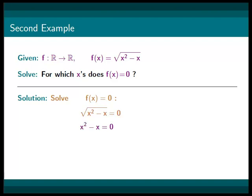We will square both sides and get x squared minus x equal to 0. Then, we will factor x out and get x times (x minus 1) equal to 0. Then, we can see that x has to equal 0 or 1.